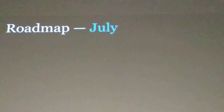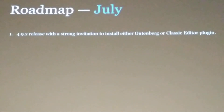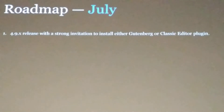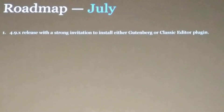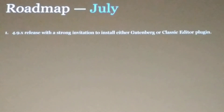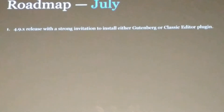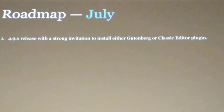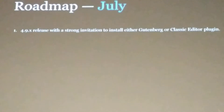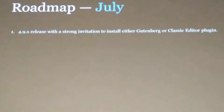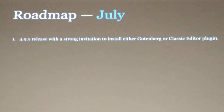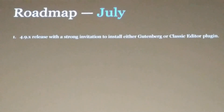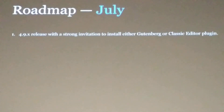Coming up in July, there's going to be a 4.9.x release that has a strong invitation in the dashboard — the first time we've done this — to either install Gutenberg or the classic editor plugin. We'll be encouraging people to get on the train early, or if your site's not going to be ready for 5.0, install the classic editor plugin, which basically locks your site into how the WordPress editor works today.